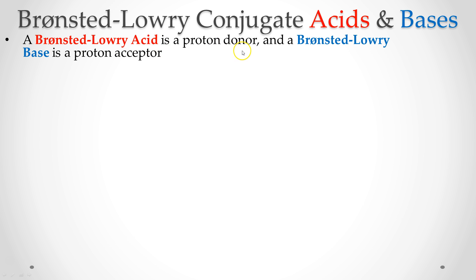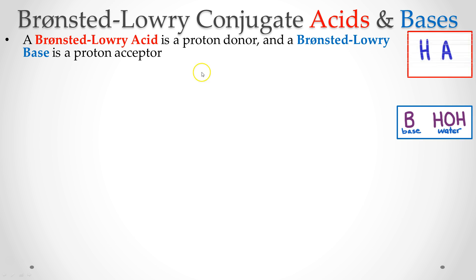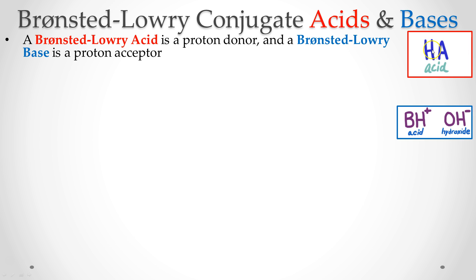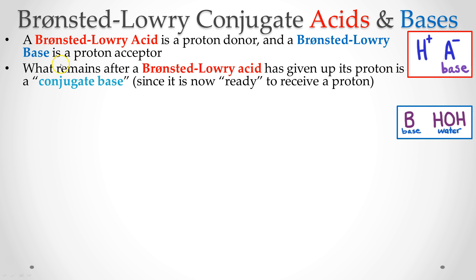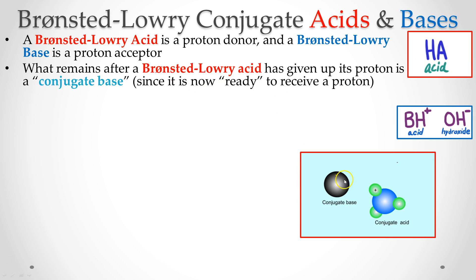So the acid donates the proton, and the base accepts the proton — kind of a reminder from before. Here the acid donates it; water in this case is acting as either an acid or base depending upon the situation. So here an acid breaks apart, and that becomes the base because it's now going to accept a proton. What you have remaining after a Brønsted-Lowry acid has given up its proton is called a conjugate base, because it's now ready to receive a proton.